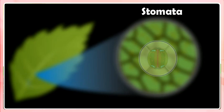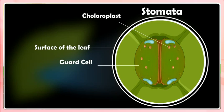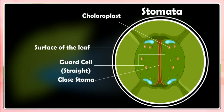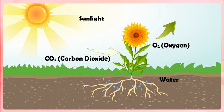Each pore is surrounded by a pair of guard cells. The opening and closing of stomatal pores in the leaves is controlled by the guard cells. The carbon dioxide gas present in air enters the leaves of a plant through the stomatal pores present on their surface. The plants also take water needed for photosynthesis from the soil, which always contains some water in it.